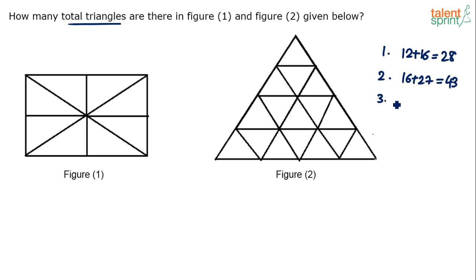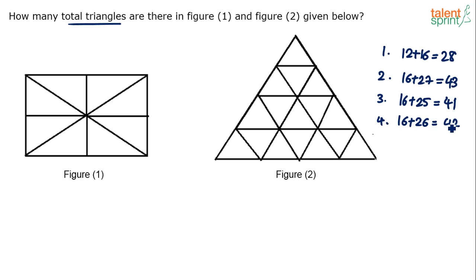Then 16 and 25, so 16 and 25 makes it 41 — that's the third option. Option 4: 16 and 26 makes it 42. And option 5: 16 and 30, so that makes it 46. So we have 41, 42, 43, 28, and 46 as options so far.